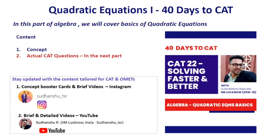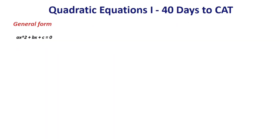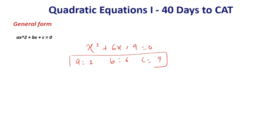Let's revise the basics first. If we talk about the basics of quadratic equations, it begins with the general form. The general form of a quadratic equation is ax² + bx + c = 0. An example can be x² + 6x + 9 = 0. Here a is equal to 1, b which is the coefficient of x is equal to 6, and c which is the constant term is equal to 9.